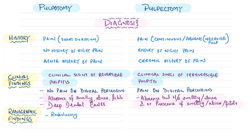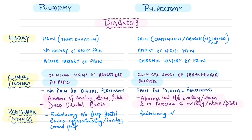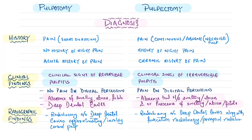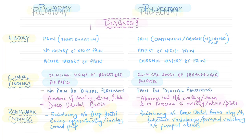Regarding radiographic findings: if there is radiolucency suggestive of deep dental caries approximating or involving the coronal pulp tissue, we perform pulpotomy. If there is deep caries radiolucency along with furcation radiolucency — involving the interradicular space — and periapical radiolucency suggestive of a periapical abscess, this is a pulpectomy case.